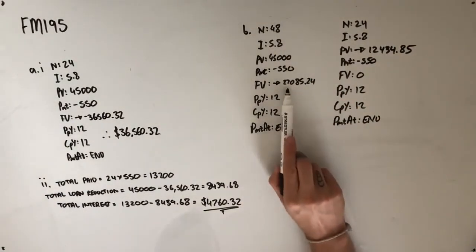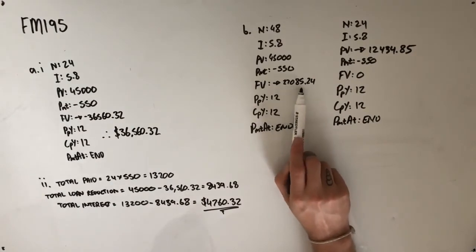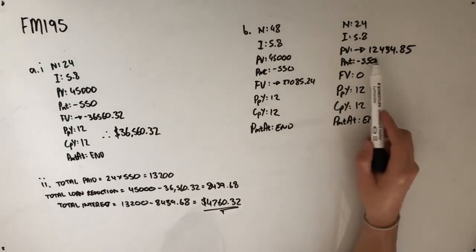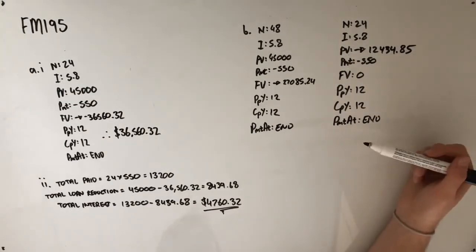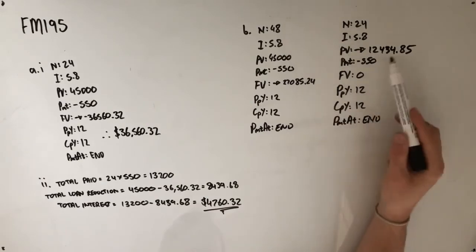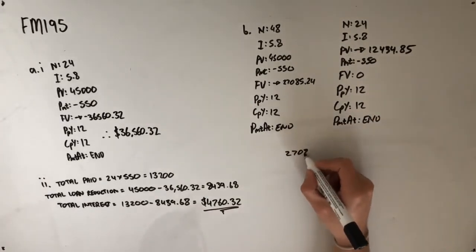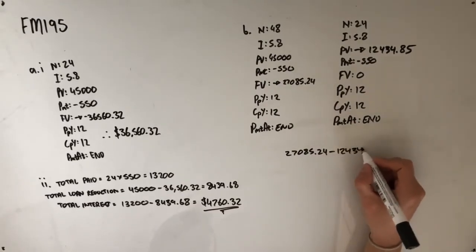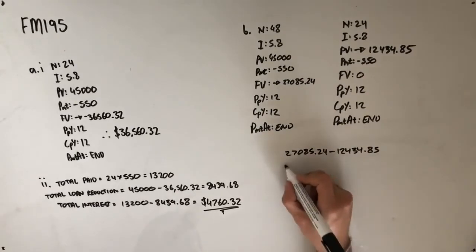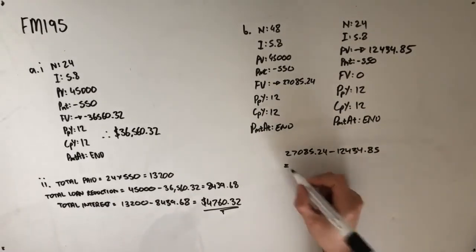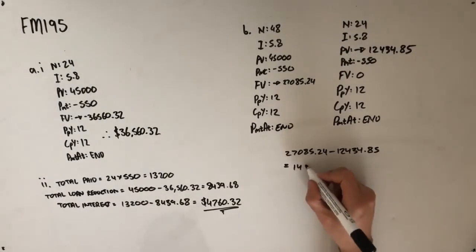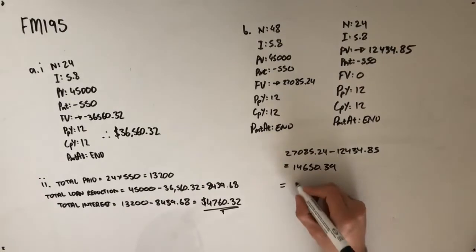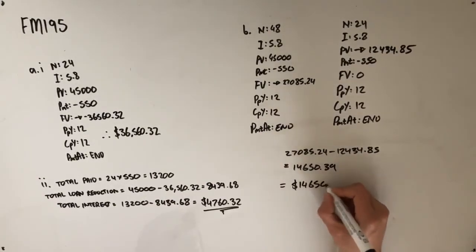So four years in, the value of the loan is $27,085.24. Sam makes a lump sum payment and the loan is reduced to this amount so it is paid off in another two years. If we find the difference between these two, so $27,085.24 minus $12,434.85, we should be left with the lump sum payment, which is $14,650.39 and rounded to the nearest dollar, $14,650.